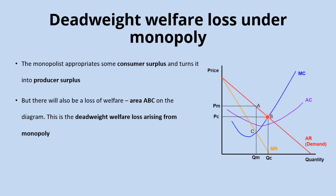So not only does the monopolist convert consumer surplus into producer surplus, it also results in an overall loss of economic welfare. We call that the deadweight welfare loss of monopoly, and it is shown by the triangle ABC on the diagram.